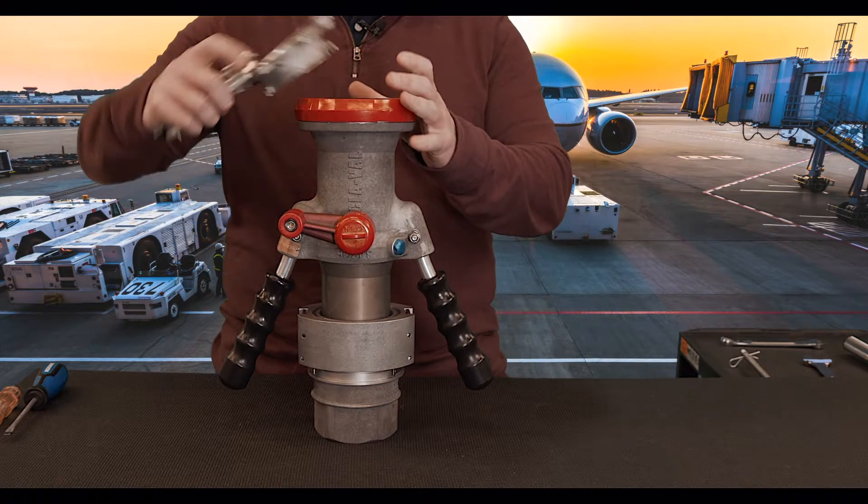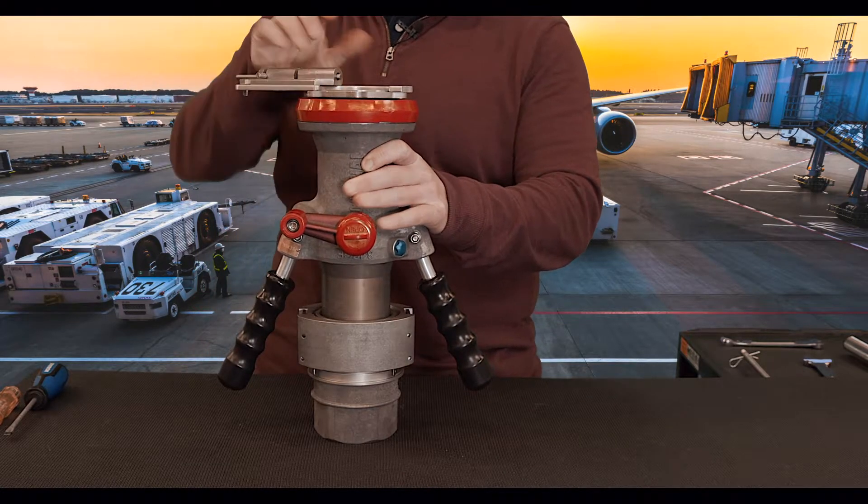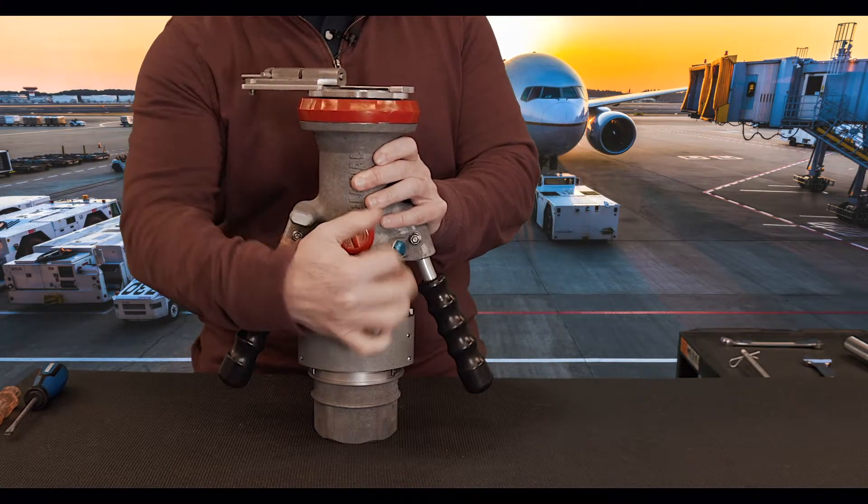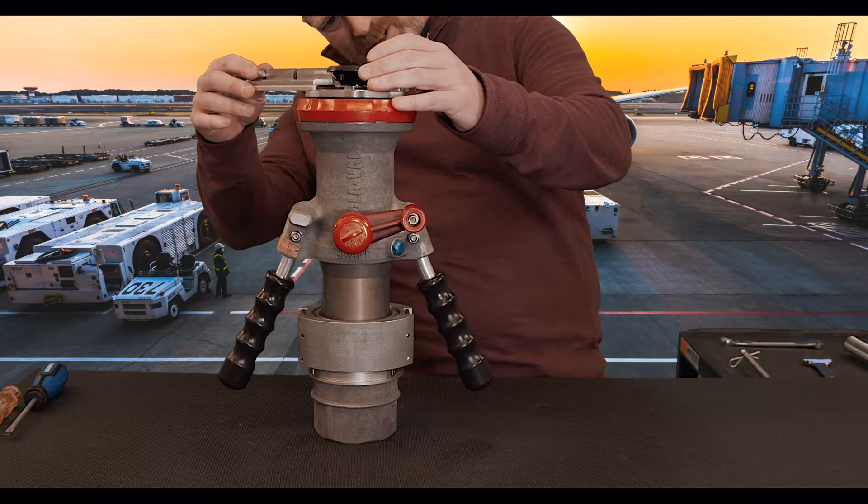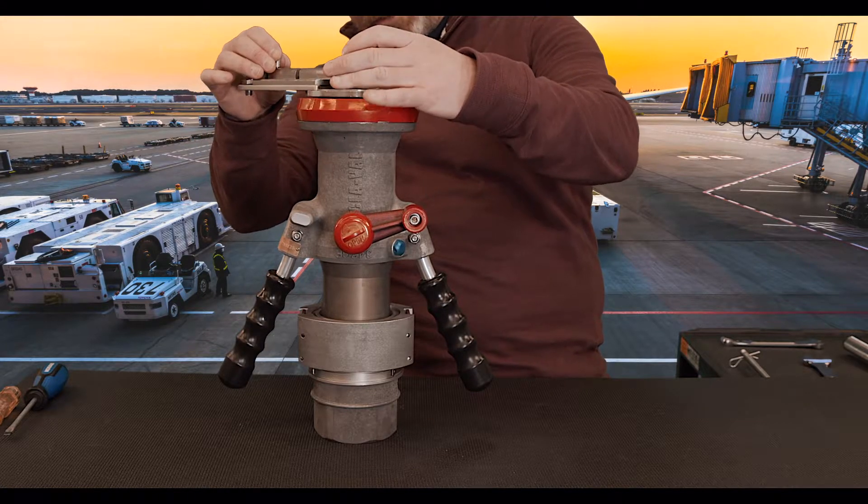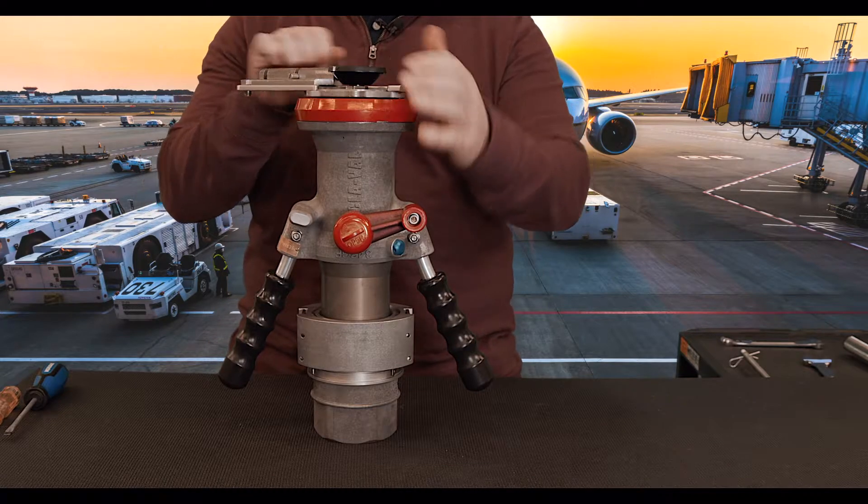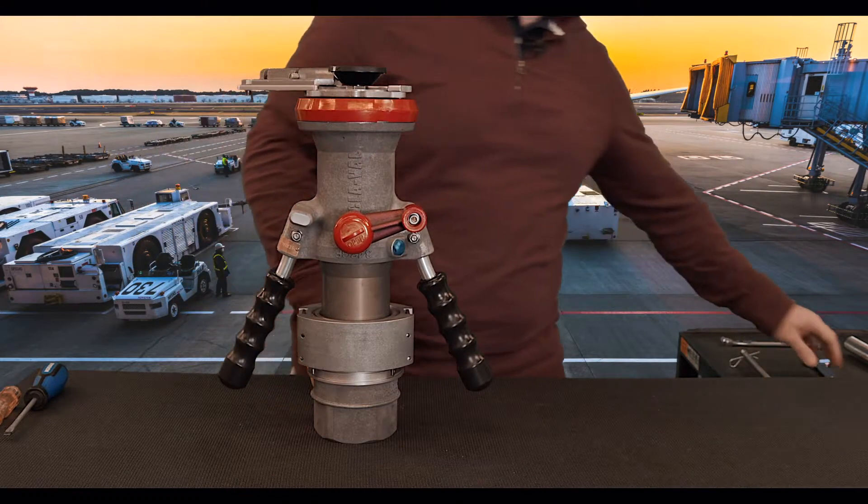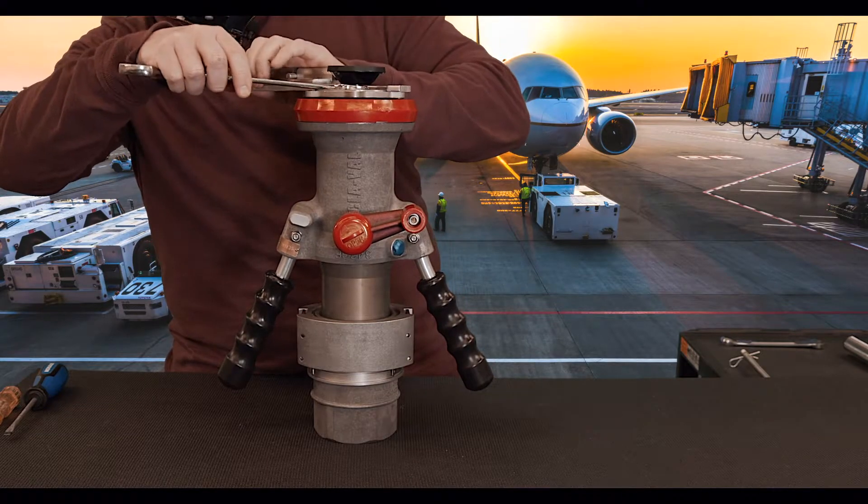The first thing we want to do is use a key to open the nozzle so we can access our poppet. Depending on the key you have—mine has a lock on it, but there's also one that doesn't—you'll need to use a screwdriver. Then you want to use a wrench, and what we'll do is loosen our swivel nut.